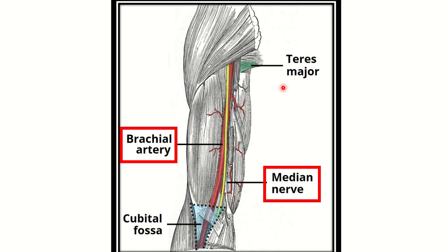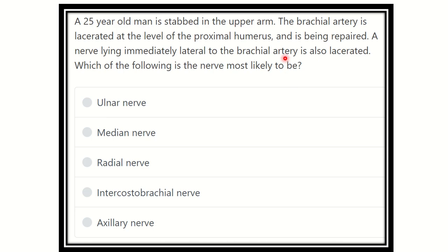Hi everyone, welcome to another question and answer session. Here is the question: a 25-year-old man is stabbed in the upper arm, the brachial artery is lacerated at the level of the proximal humerus, and a nerve lying immediately lateral to the brachial artery is also lacerated. Which of the following is the nerve most likely to be?